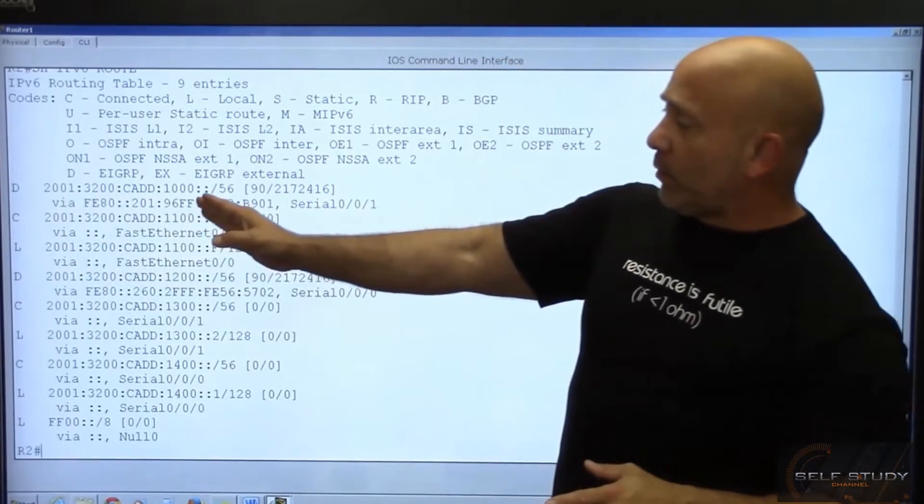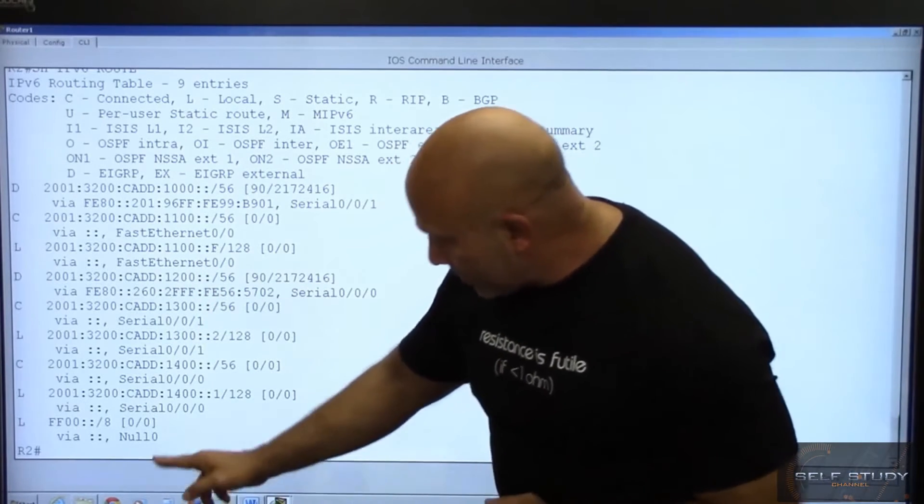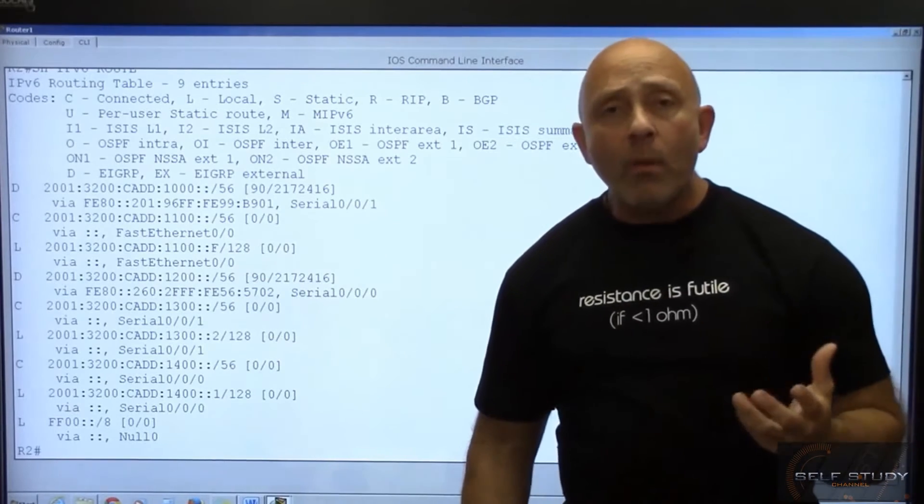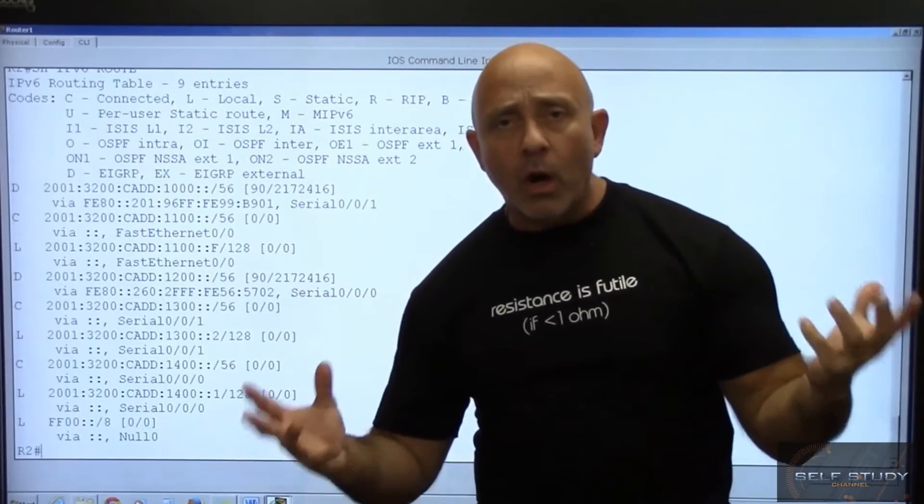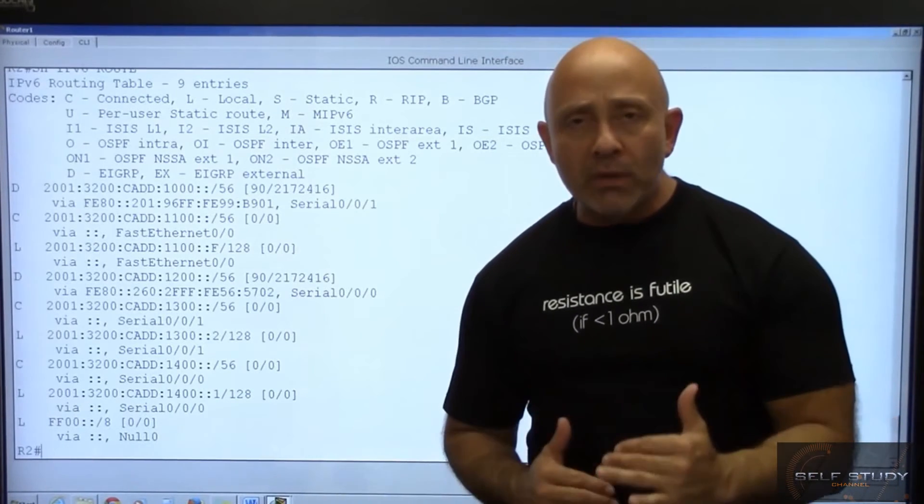Now you see these, I'm running about the 2001:3200:CAD:1000, I'm also learning about the 1200. Is there anything else? Nothing, that's it, only those two. So both routing protocols are working and I'm able to get across from one side to the next using them.